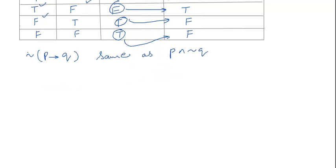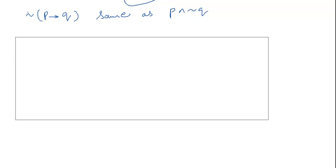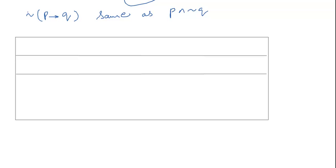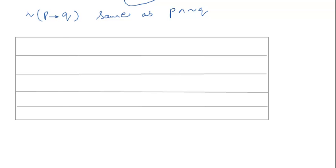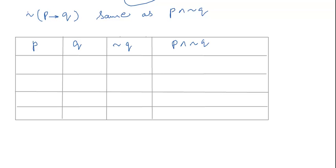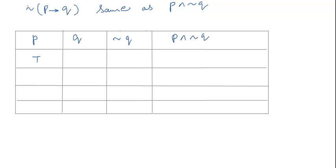Let me show you how this works by making another truth table. The first column represents p, the second column represents q, the third column represents the negation of q, and the fourth column represents p conjunction negation q. We write the values for p as true, true, false, false, and for q as true, false, true, false. The negation of q turns true to false and false to true, so we fill up column three accordingly.